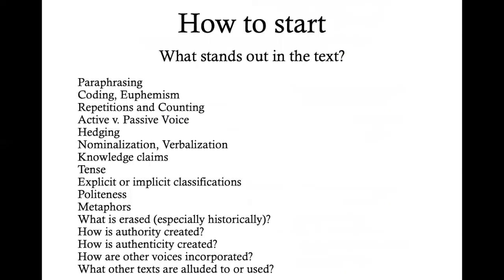So when we start, we're going to think about what stands out in the text. Generally, when reading through the first time, I'll underline or circle things that seem important, seem confusing, seem out of place, or things that are repeated.